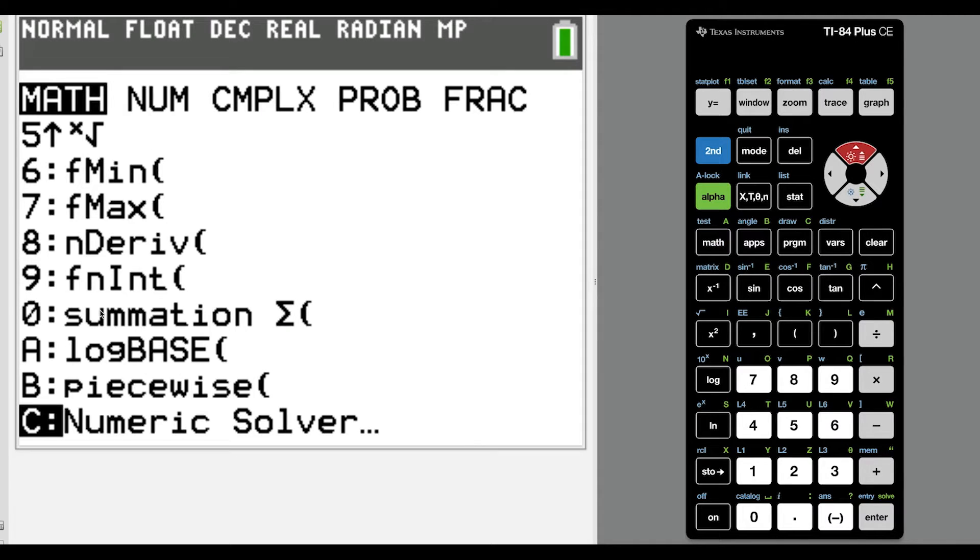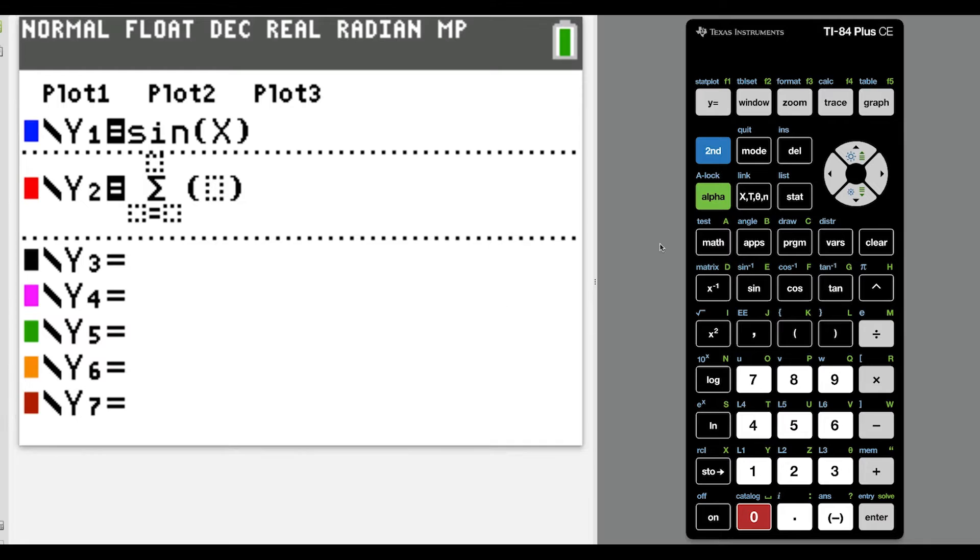So how can we use the calculator strategically to cover the entire curve within that window? So I hit math up, and I go to number 0 for summation. And now I'm going to write our series in terms of n, which is alpha log. And then we're starting at n equals 0. And remember from the first page,